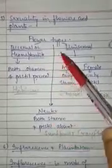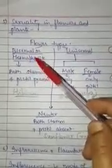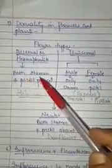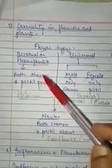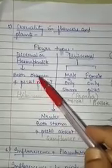Next we will go to sexuality in flowers and in plants. We have different types of flowers. Bisexual or hermaphrodite flowers are the flowers which contain both stamen and pistil. Such flowers in which the male reproductive organ and the female reproductive organ — stamen and pistil — are both present are called bisexual or hermaphrodite flowers. The example is hibiscus.